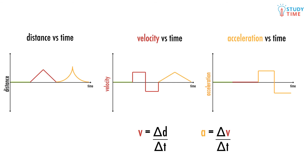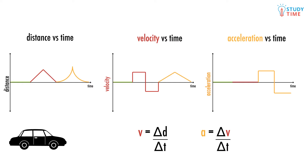These are three graphs showing the same information about how a car moves with constant acceleration. From them you can see the relationship between distance, velocity, and acceleration. The first graph is distance versus time, the second is velocity versus time, and the third is acceleration versus time. The green line shows that the car is stationary — not moving forward or backwards, perfectly still. We know this because as time moves forward, the distance of the car doesn't change.